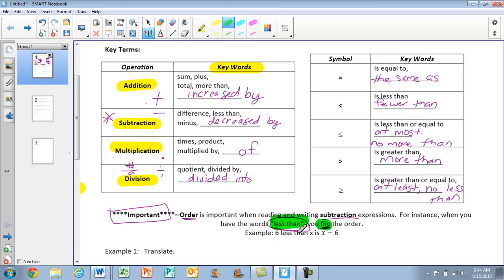For example, when it says 6 less than x, you are flipping the order here. Instead of 6 coming first, it comes second. So keep that in mind. Less than makes a difference.